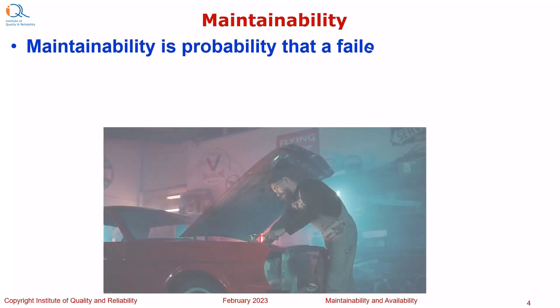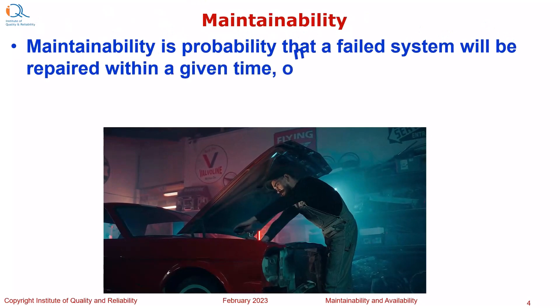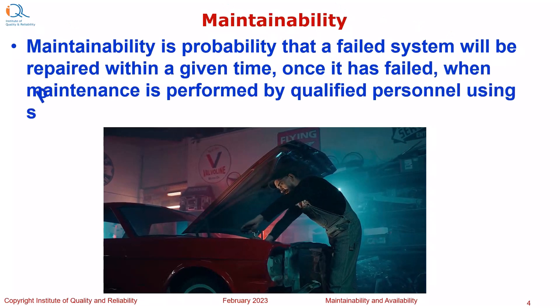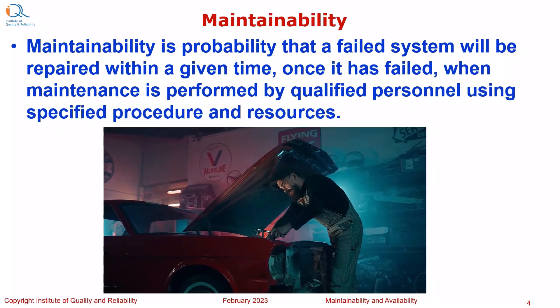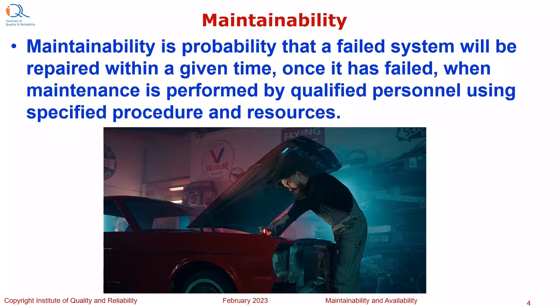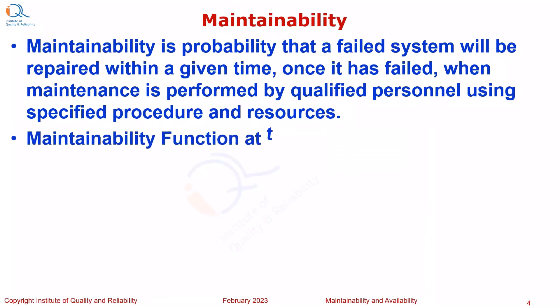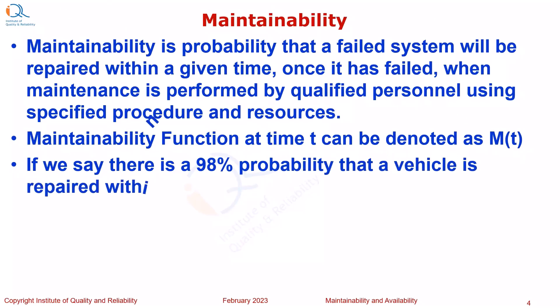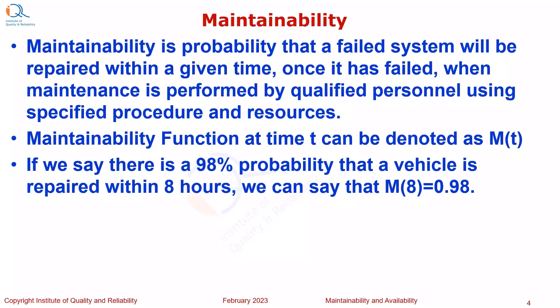Maintainability is the probability that a failed system will be repaired within a given time once it has failed, when maintenance is actually performed by qualified personnel using specified procedure and resources. Maintainability function at time t can be denoted as M of t. If we say that there is 98% probability that a vehicle is repaired within 8 hours, we can say that M at 8 hours equals 0.98.